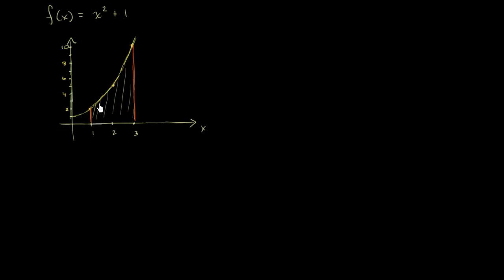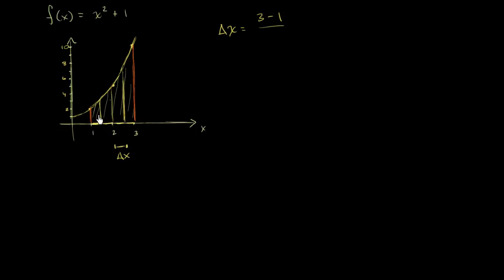So four rectangles of equal width. And I haven't really defined the top of the rectangles just yet. Let's think about what those widths have to be if they're going to be equal width, and we can call that width delta x. Delta x is going to be the total distance traveled in x: we finish at 3, we started at 1, and we want four equal width rectangles. So it's going to be equal to one half.